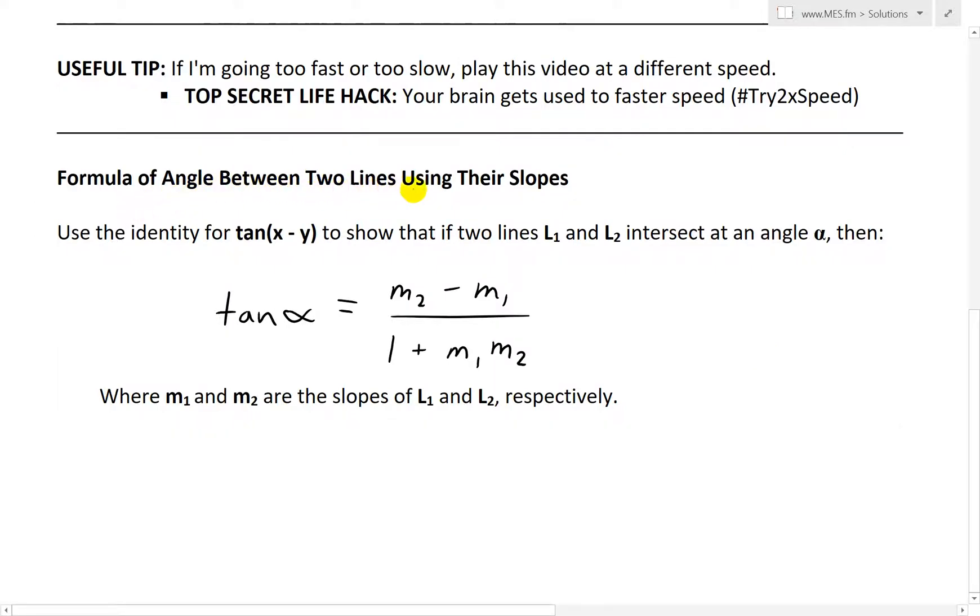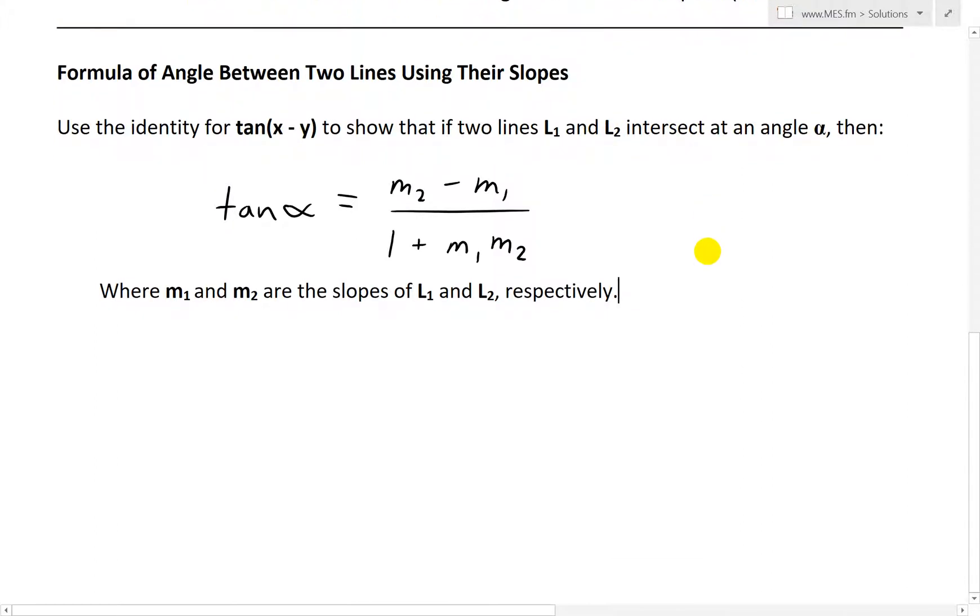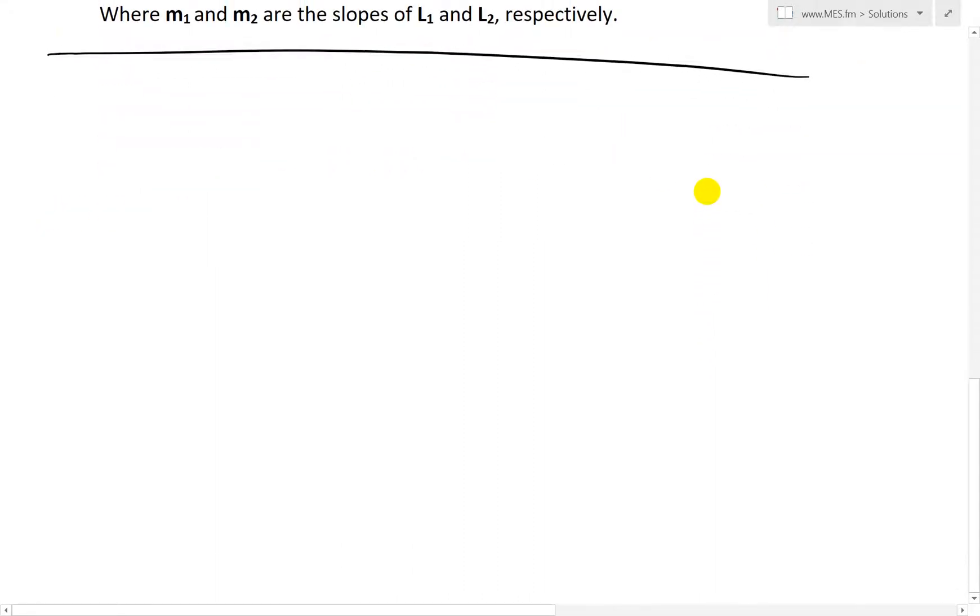The formula of angle between two lines using their slopes is a mini problem from my calculus book. It says: use the identity for tan(x - y), which I covered in my last video, to show that if two lines L1 and L2 intersect at an angle alpha, then let's go about deriving this.